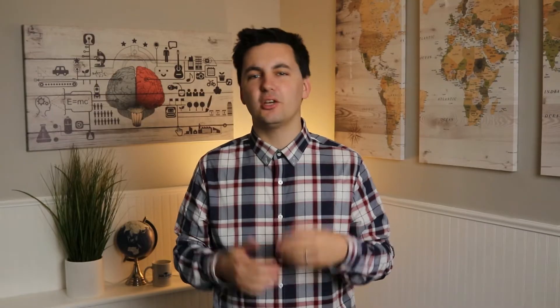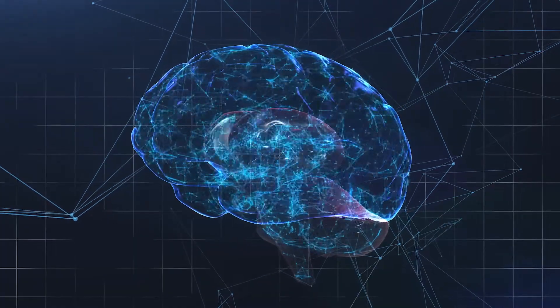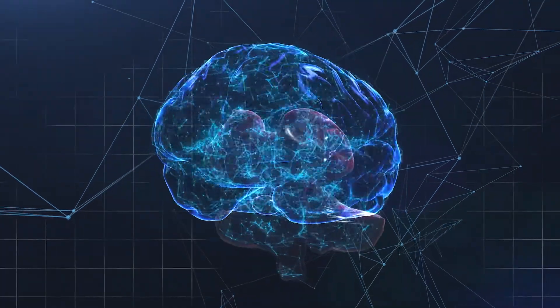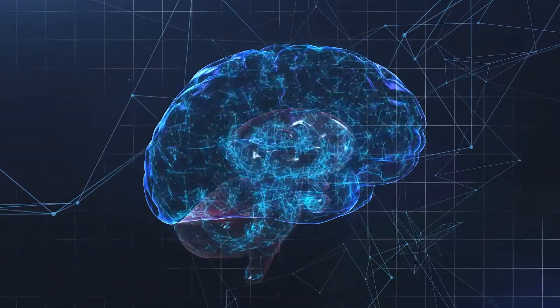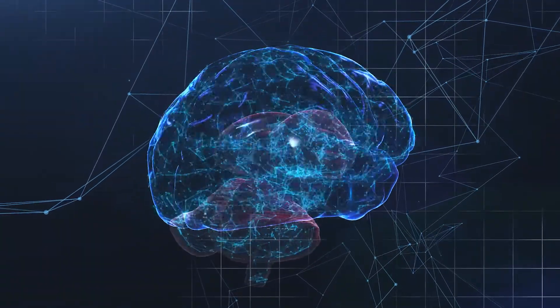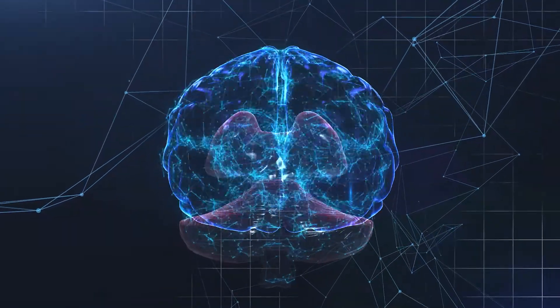This type of bias happens because once your brain learns something, it starts to make connections to all the other information that you know and you start to see patterns. Remember, hindsight is always 20-20.